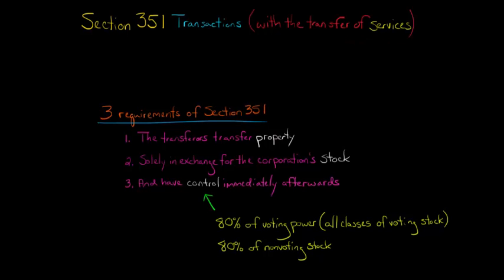So just a quick review, the three requirements for a Section 351 transaction are that the transferors transfer property solely in exchange for the corporation's stock, and then they have control, which is 80% of vote and value, immediately afterwards. So the question is, what if one of the transferors is also providing services to the corporation in exchange for the corporation's stock? Does that person count as part of the control group for purposes of determining whether they have 80% of the vote and value afterwards?